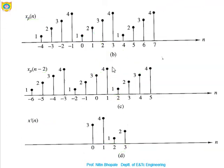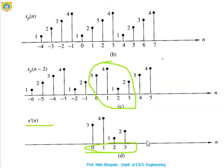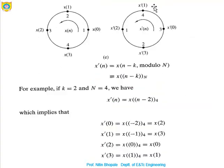x'(n) is bounded again for the region 0 to 3. So for this entire section, concentrate only on the region 0 to 3. xp(n-2) is converted to x'(n) within the 0 to 3 region only. This represents the periodic nature of the signal. Written in a circular fashion, x(0), x(1), x(2), x(3) are arranged in an anti-clockwise direction. Similarly, x'(0), x'(1), x'(2), x'(3) appear in circular form.